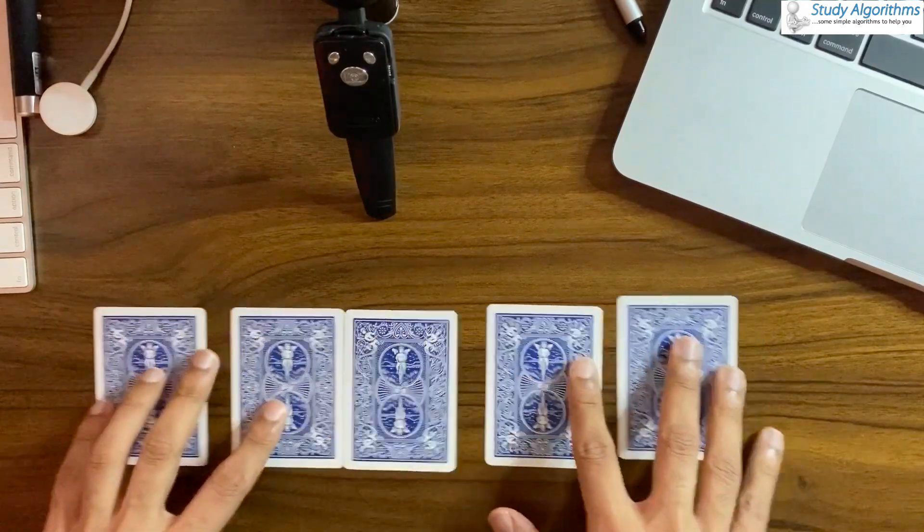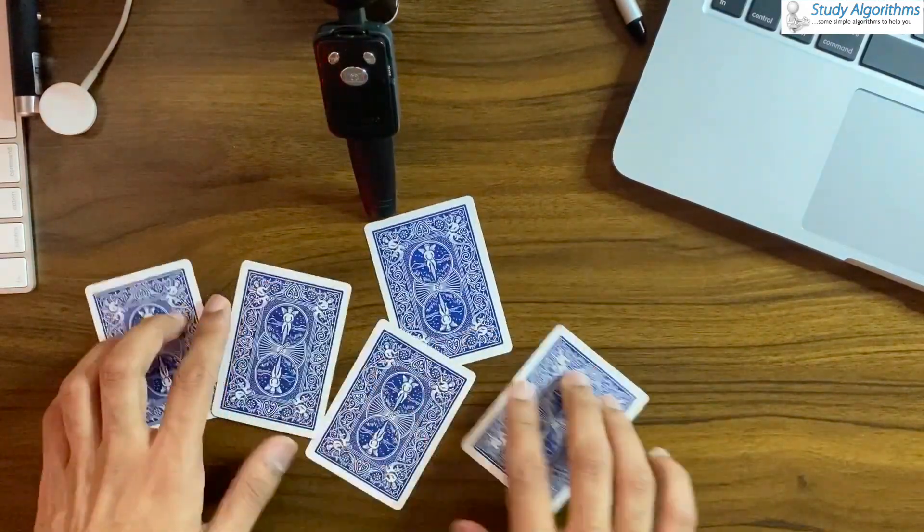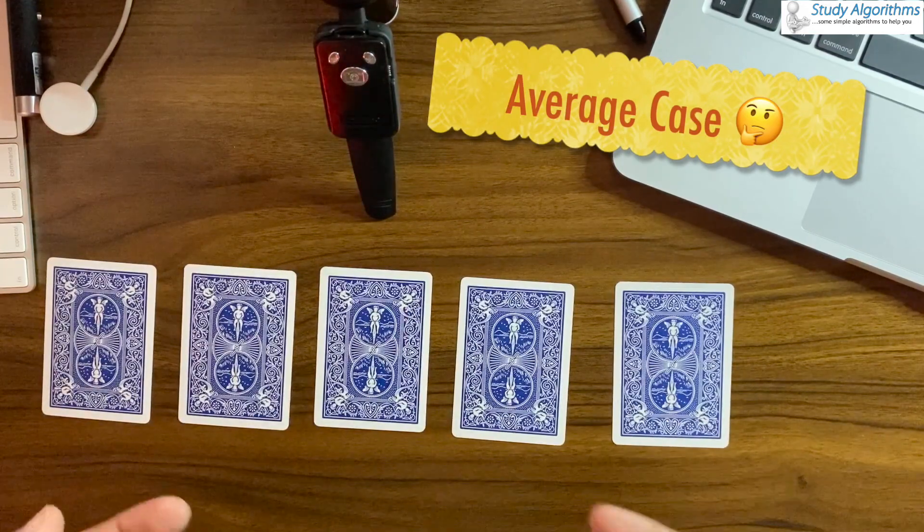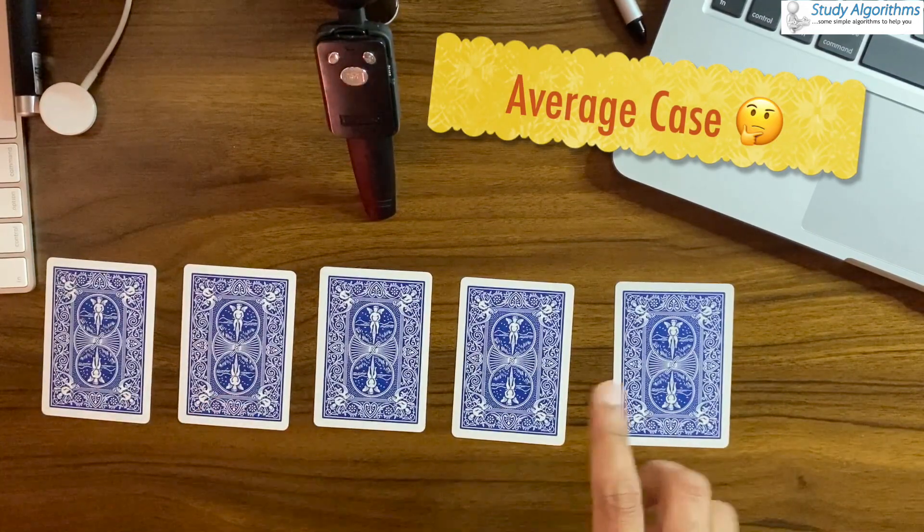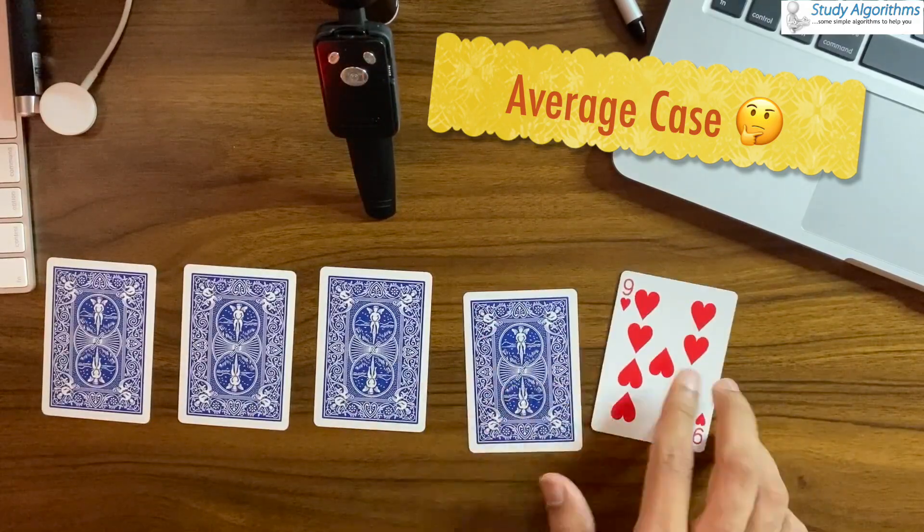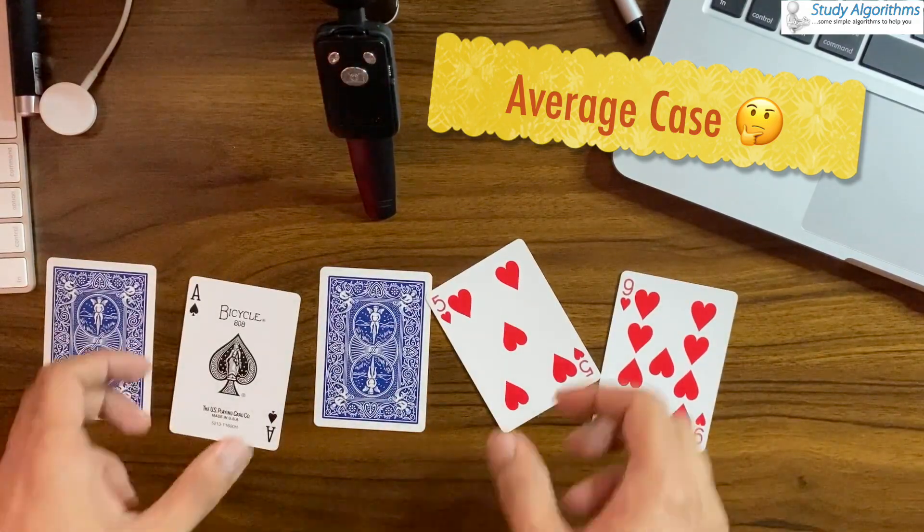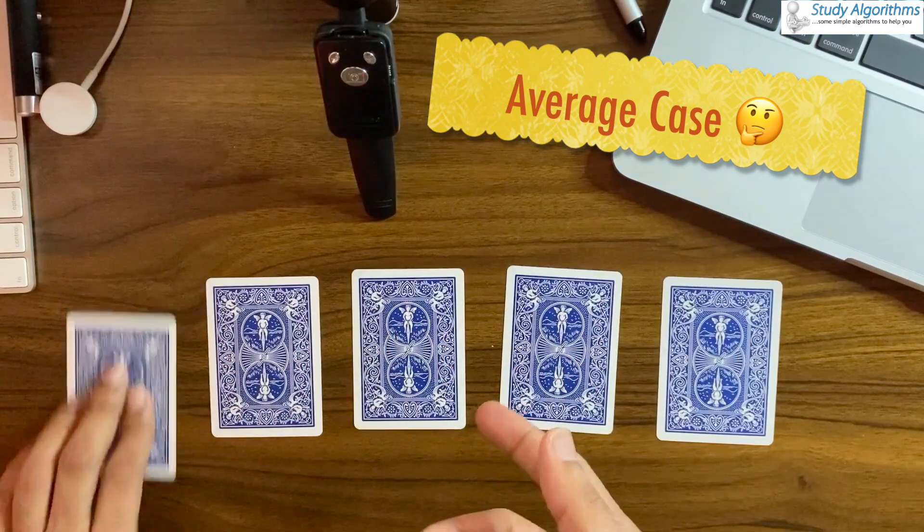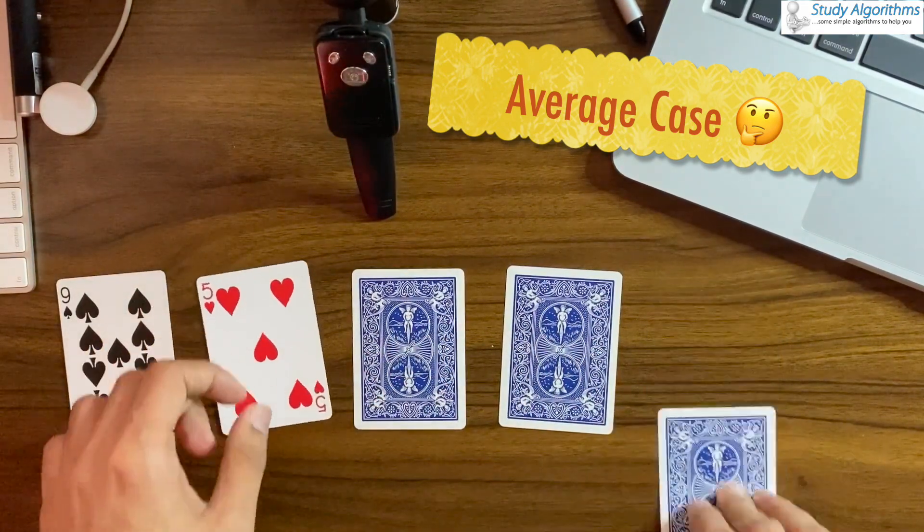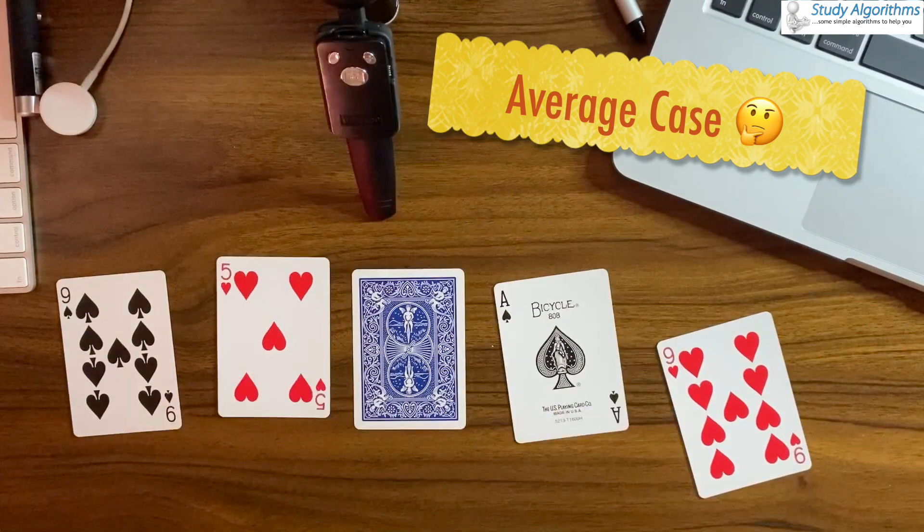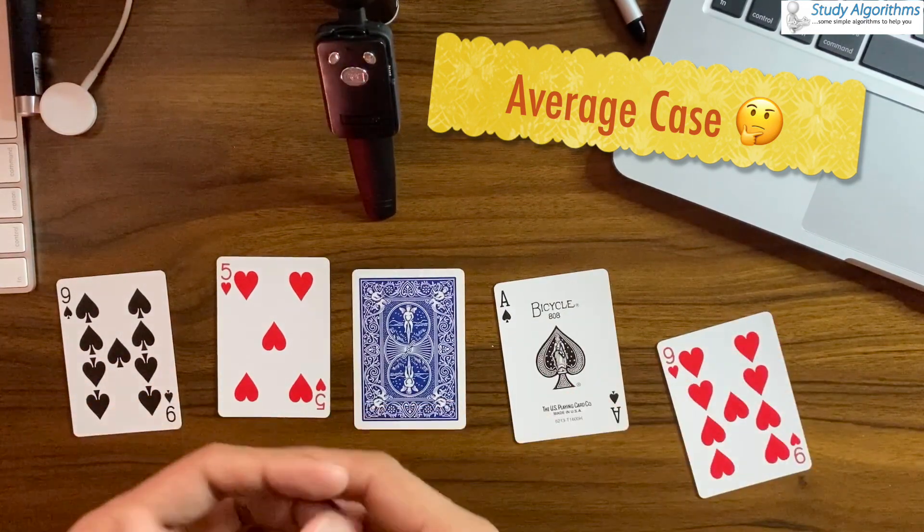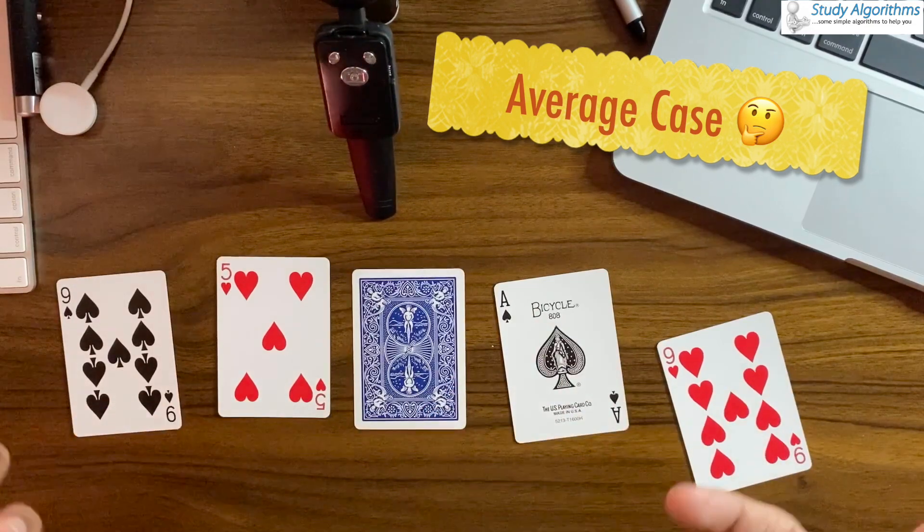Let me now shuffle this deck a little bit. An average case would be that I flipped some cards and I find the ace during the third flip or sometimes during the fourth flip. Now this is an average case and it can be calculated by doing these iterations over and over again.